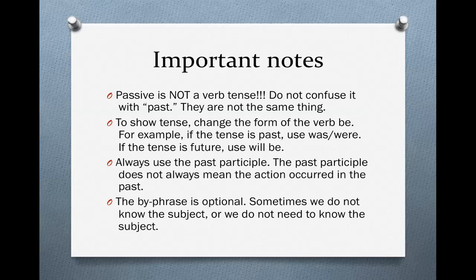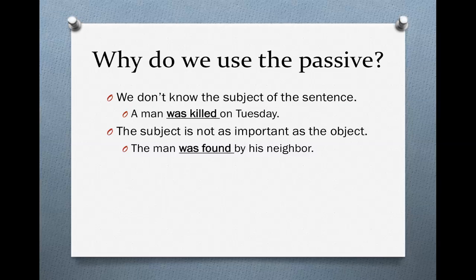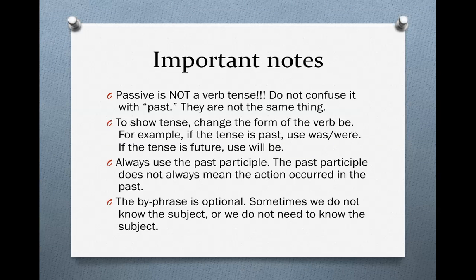The by-phrase is optional. For instance, in 'A man was killed on Tuesday,' we don't know who killed him, so we can't say 'A man was killed by his wife' or 'by his best friend' — we don't know. So we can't use the by-phrase there, so we don't. You don't always have to have the by-phrase. You must have a form of the verb 'be' and the past participle — no choice there. The by-phrase, sometimes you need it, sometimes you don't.